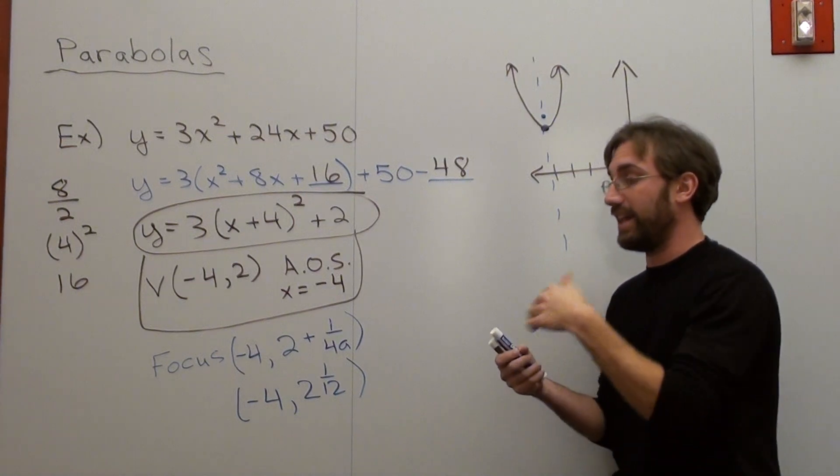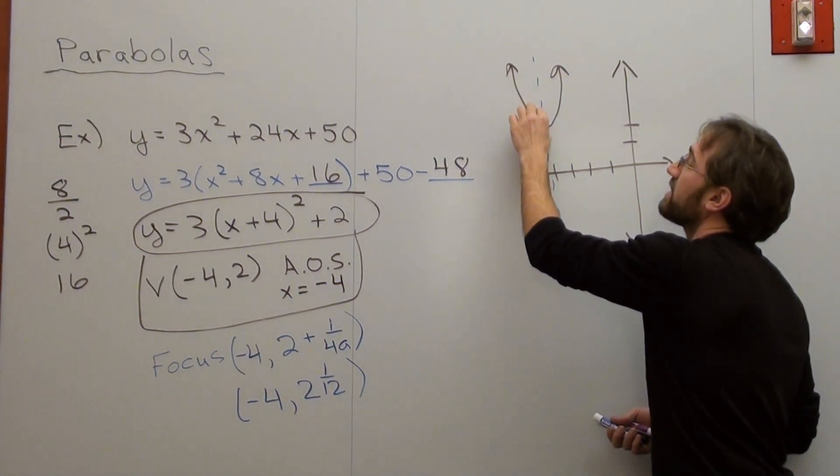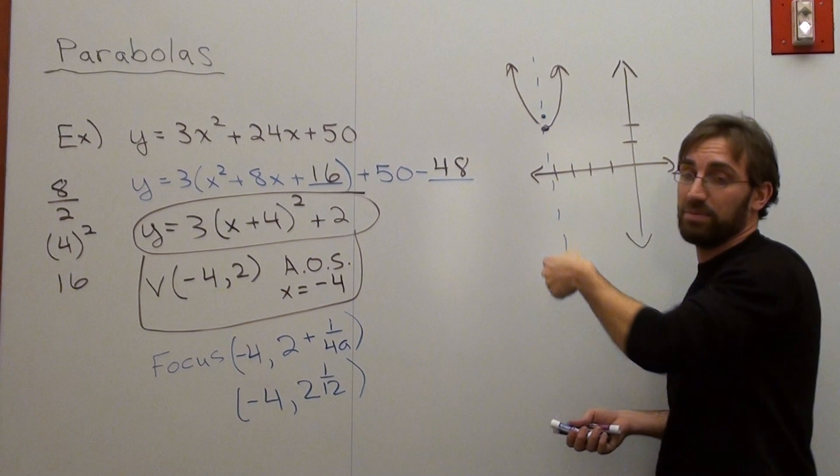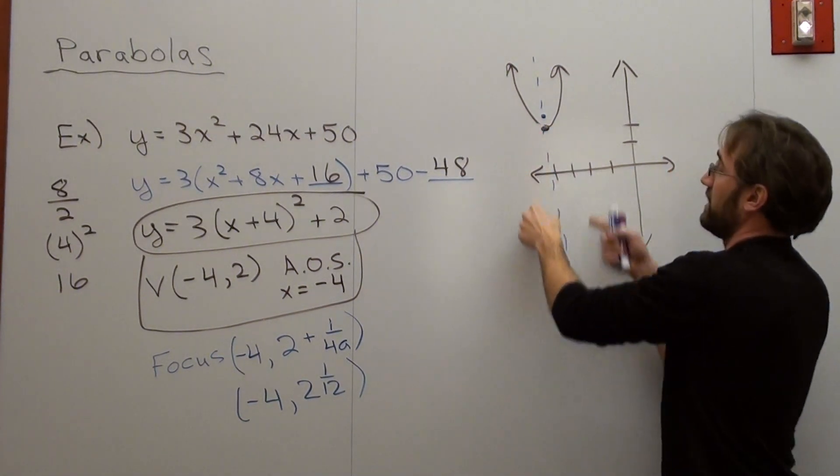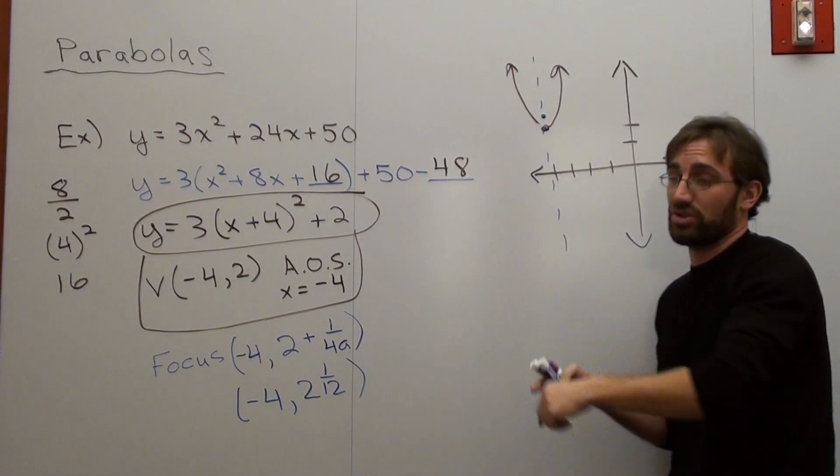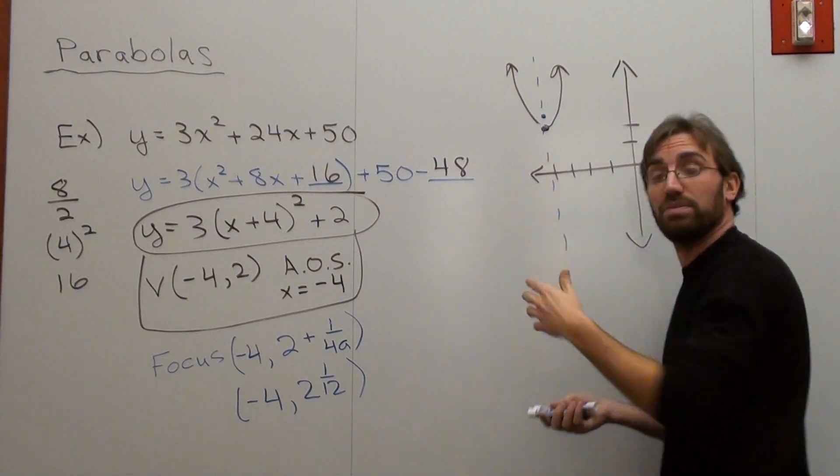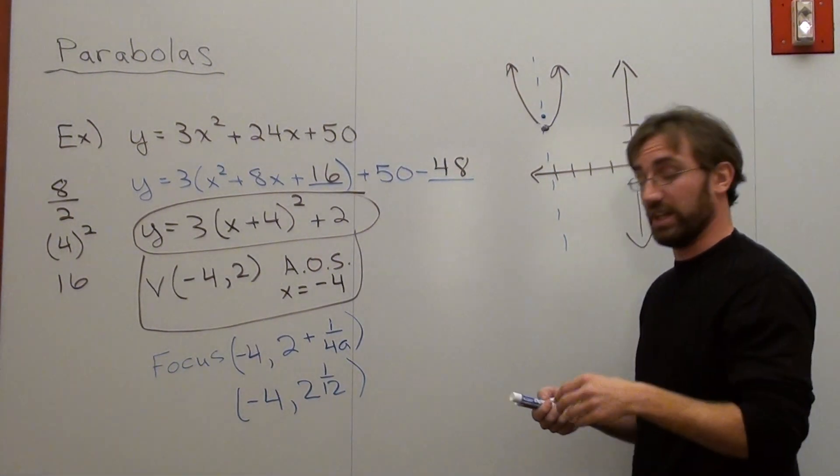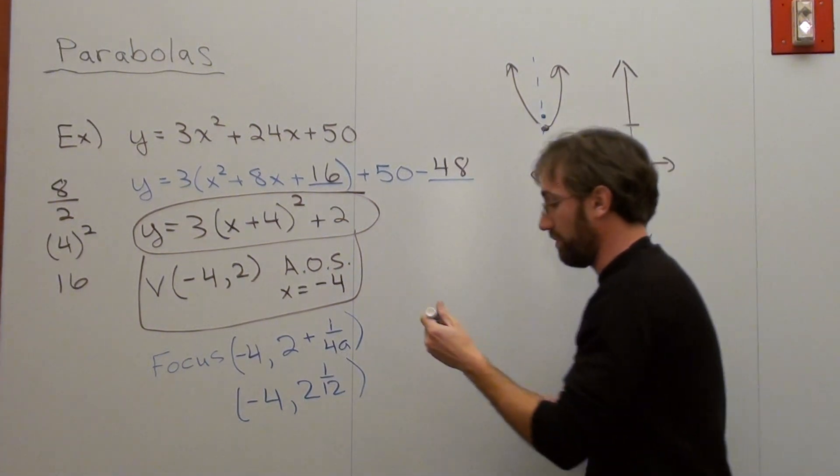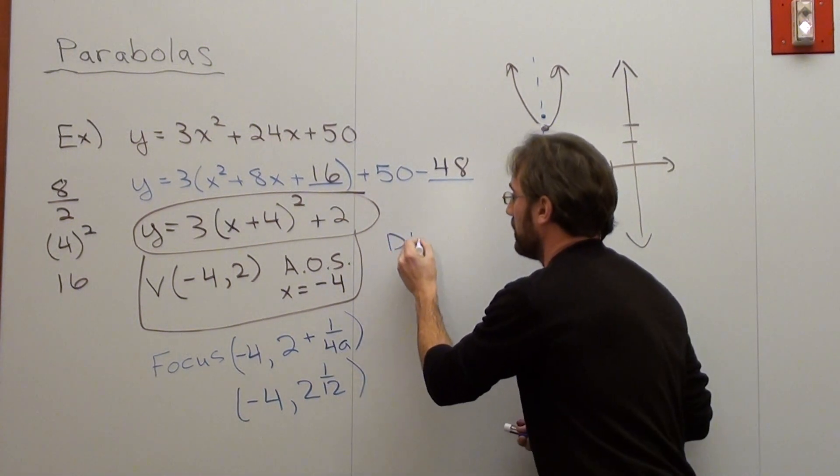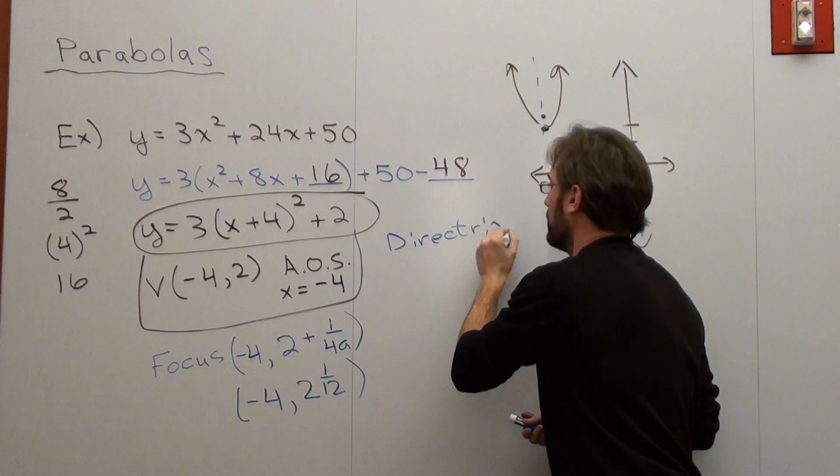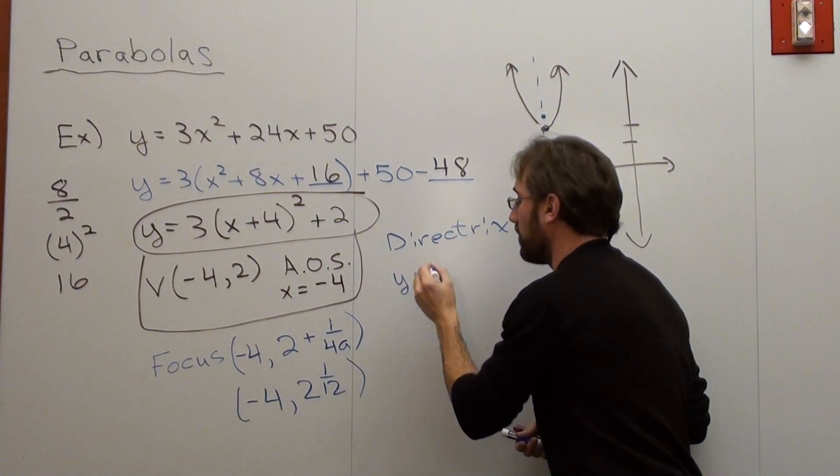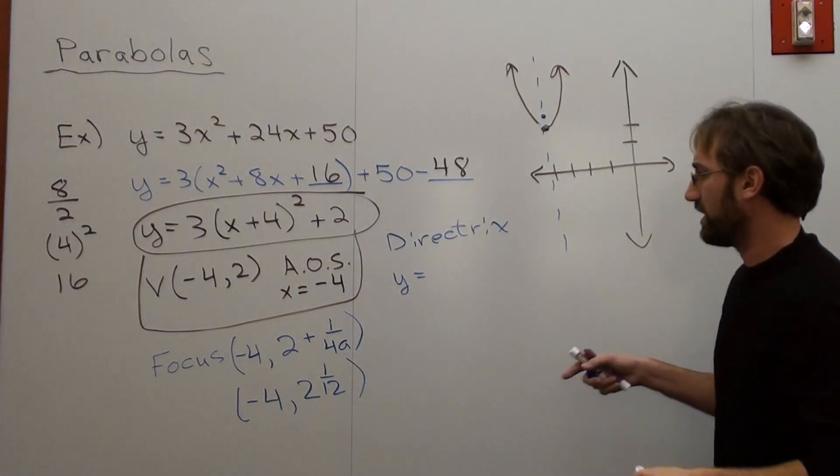Now my directrix is a line. And it's exactly the same distance from the vertex as to the focus, except it's on the opposite side. So if my graph were facing down and my focus were here, my directrix would be above the graph. In this case, it's below the graph. And it's actually pretty easy to figure out what it is. It's a horizontal line. So my directrix is y equals.